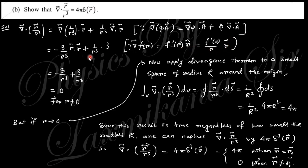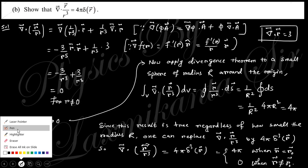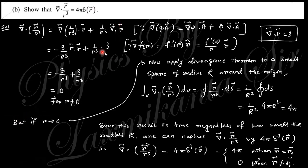The derivative gives −2/R⁴, and with the R factor it becomes −2R-vector/R⁵. The divergence of R is 3 (you know from vector analysis that divergence of R, the position vector, equals 3). So R · R = R², giving 3/R³ − 3/R³ = 0. So the result is 0 for R ≠ 0.